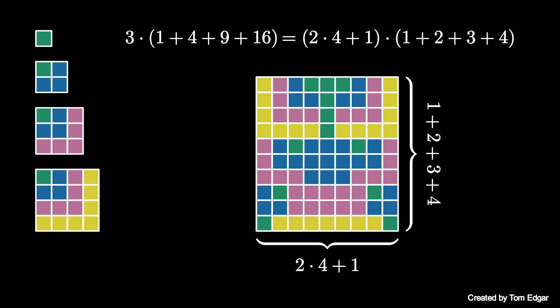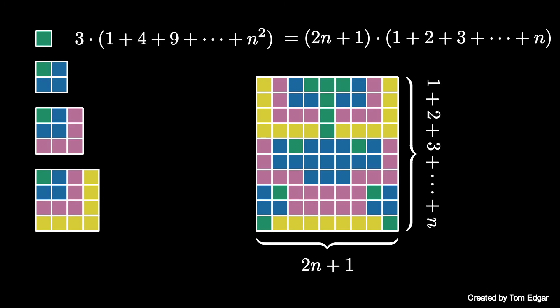There is nothing special about four squares. The analogous geometric construction will work for the sum of the first n squares, showing that 3 times the sum of the first n squares is 2n plus 1 multiplied by the sum of the first n positive integers.